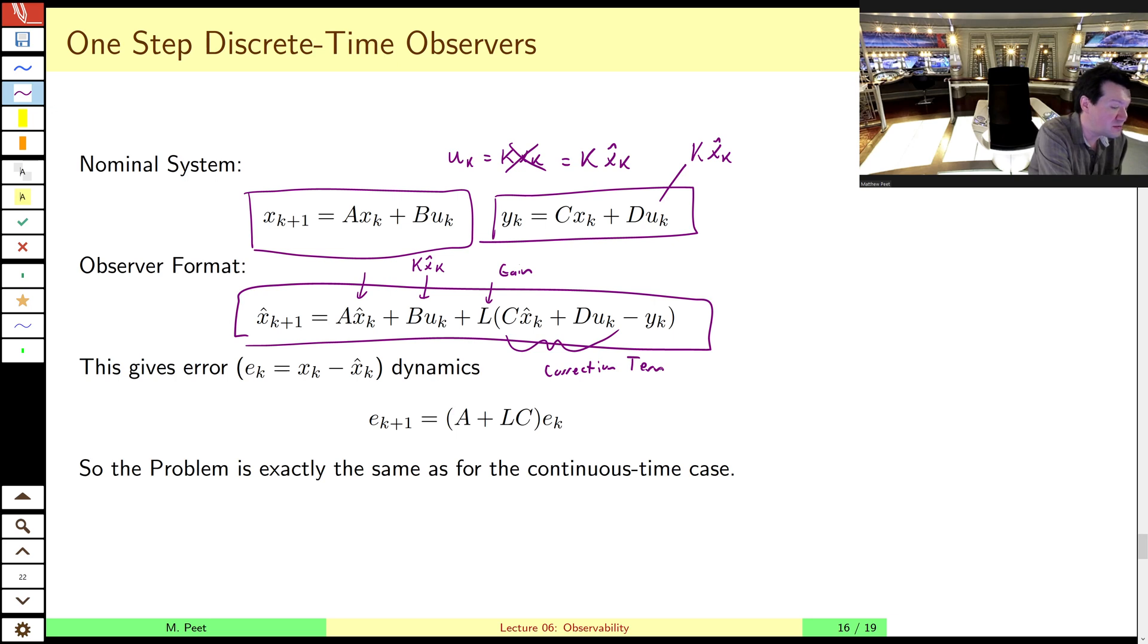And the correction term is what you would expect. It's the estimate of what we expect to be seeing, say y hat of k, based on our current estimate of the state. And then updated using our input, which is kx hat of k. And we take the difference between what we expected to see and what we actually see. And we multiply that through this gain term here to correct our estimate of the state.